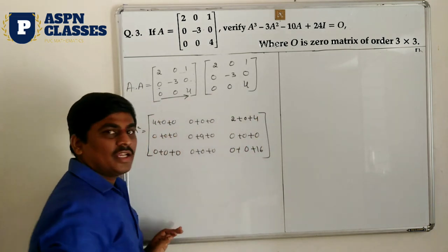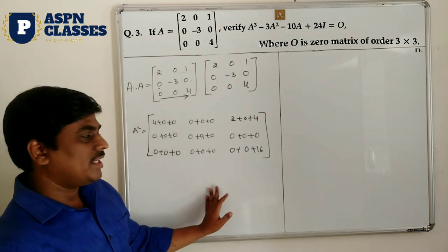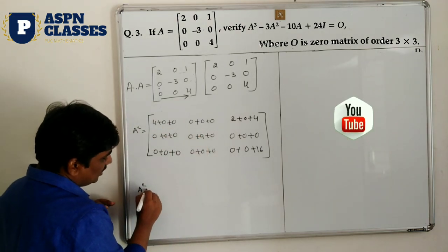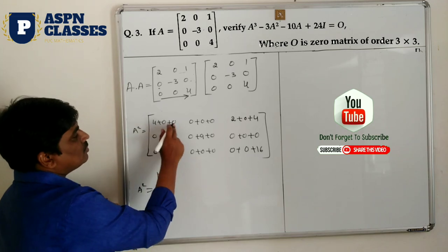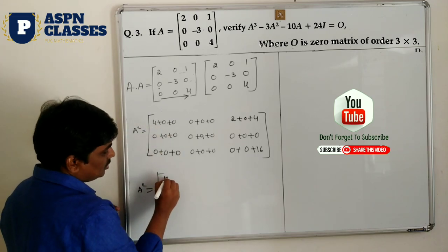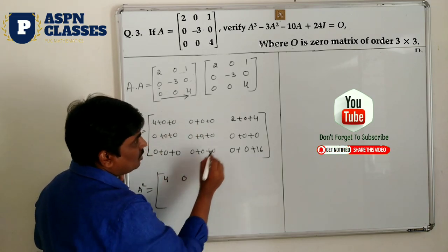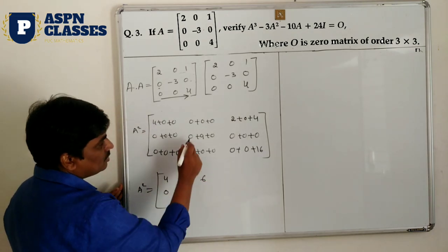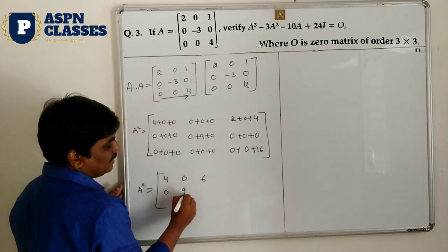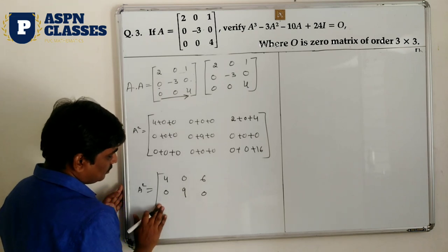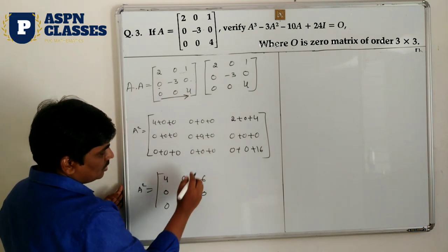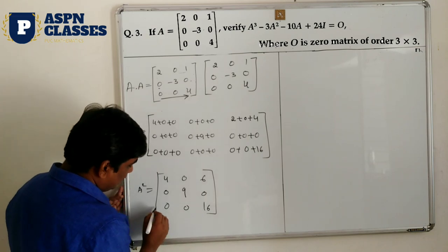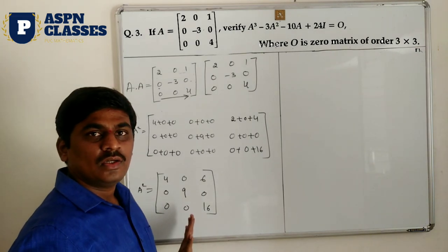Carefully observe the result. Add all the results to get the A square answer: first row is [4, 0, 6], second row is [0, 9, 0], third row is [0, 0, 16]. So now you get your A square answer.